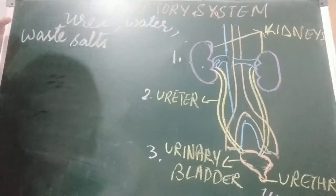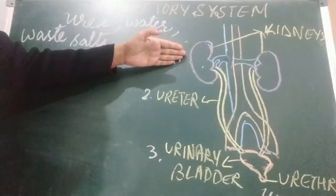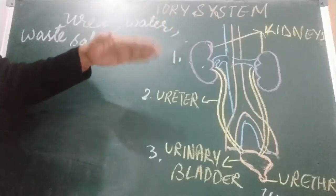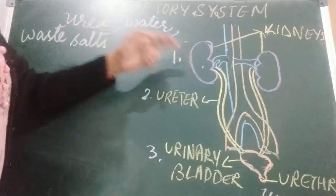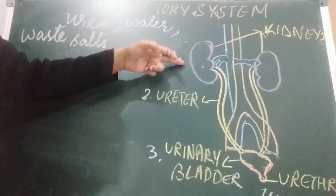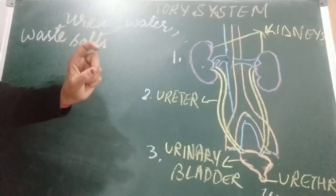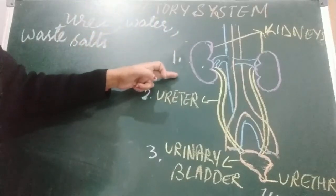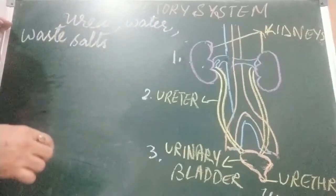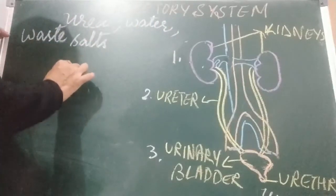A pair of kidneys are present in humans. These kidneys are situated at the level of the waist on either side of the vertebral column. Kidneys are brick red in color and bean-shaped — like rajma bean. Each kidney contains a large number of coiled tubes called nephrons. Nephrons are the filtering units of the kidney.